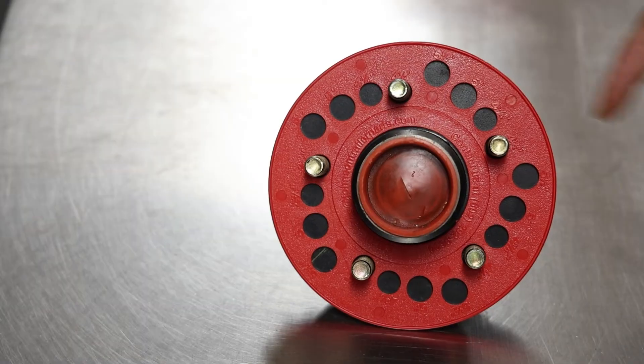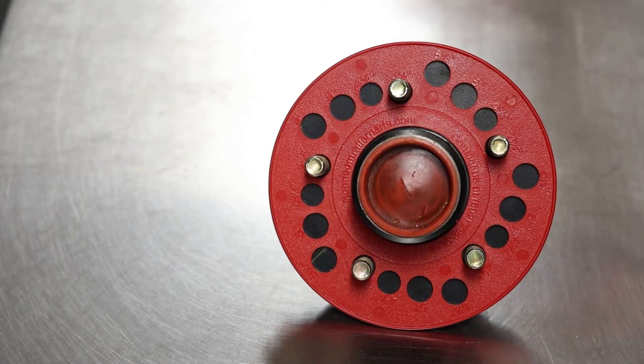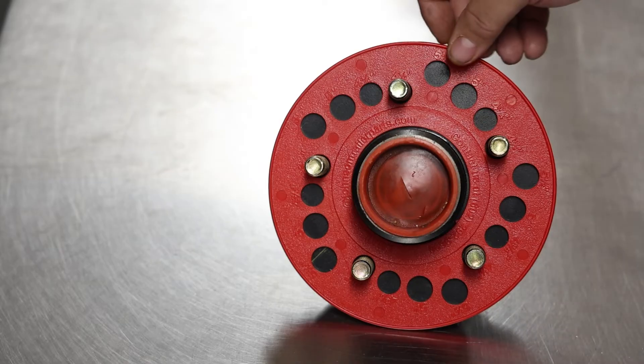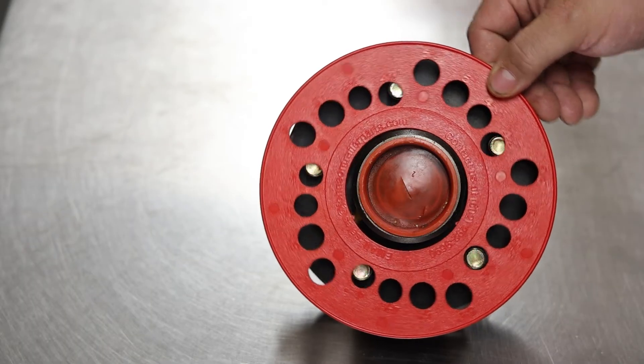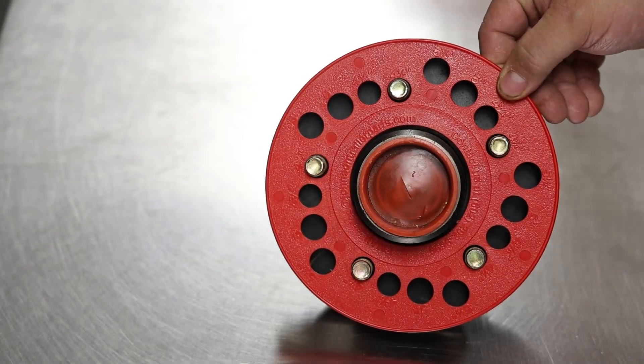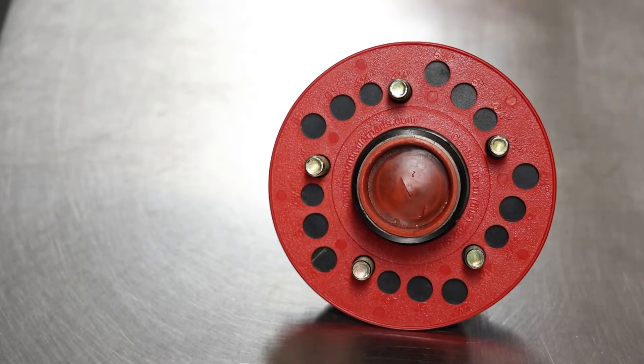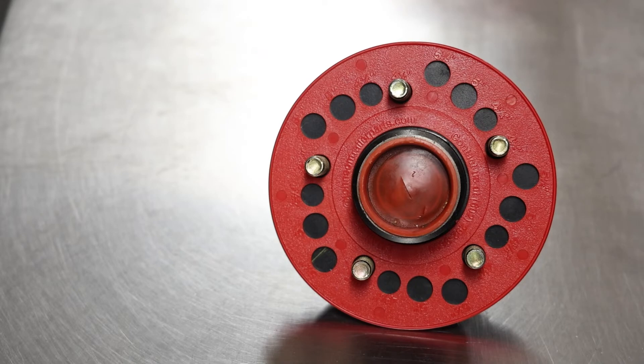You slip it on, you can measure it while it's still on the trailer with the wheel on. You would just stick it over the top of the lug nut there and it's going to tell you exactly which bolt pattern it is.